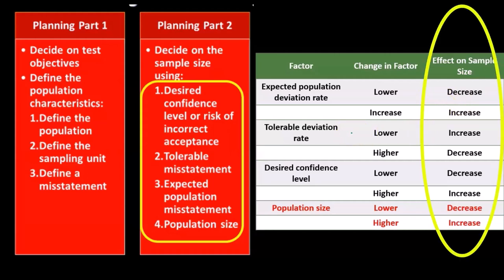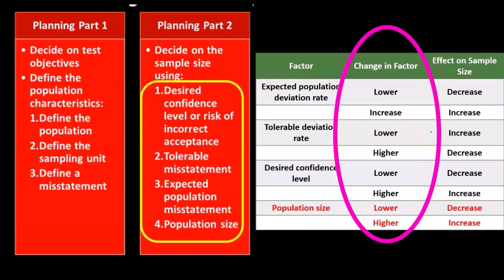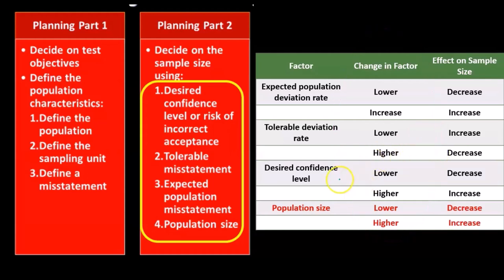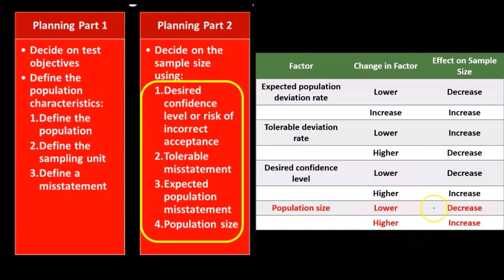Then we have the tolerable deviation rate — this is an inverse relationship. If the change in the factor is lower, we have an increase in sample size; if it's higher, the effect on sample size is a decrease. The desired confidence level follows the same relation: lower means decrease, higher means increase. And for the population, lower means decrease, higher means an increase.